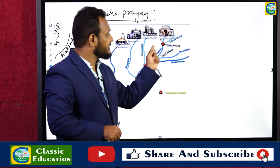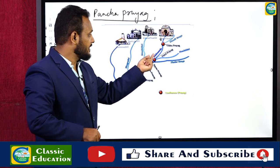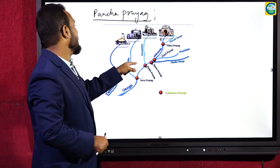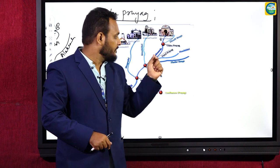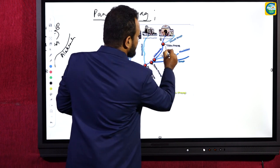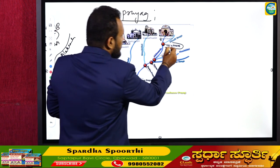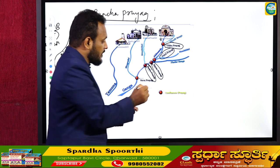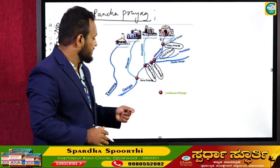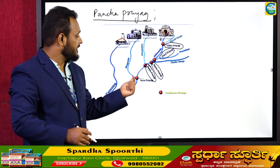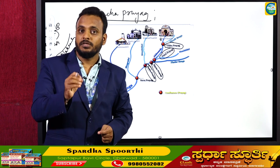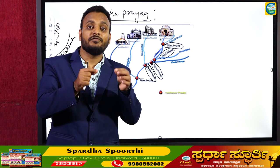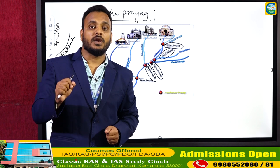Alaknanda is joined by Nandakini at Nandaprayaga, and by Pindar Ganga at Karna Prayaga. Then Alaknanda is joined by Mandakini river, coming from Kedarnath, at Rudra Prayaga. These are the Panchaprayag: Vishnu Prayaga is first, Nandaprayaga is second, Karna Prayaga is third, Rudra Prayaga is fourth, and Devaprayaga is fifth. At Devaprayaga, Alaknanda is joined by Bhagirathi, and from Devaprayaga the river is called Ganga river.